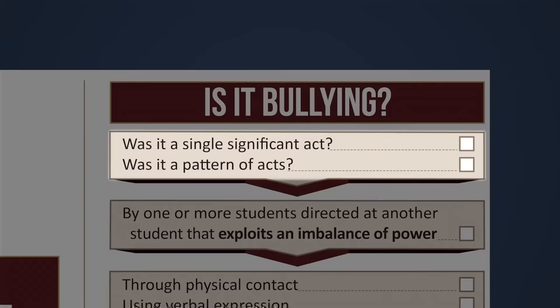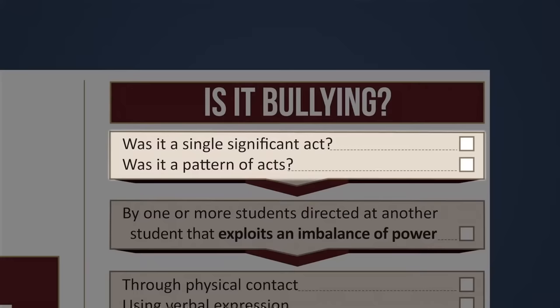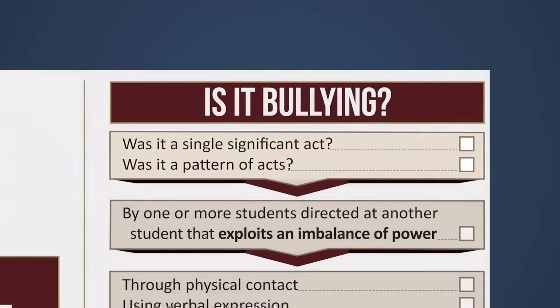The first question that should be asked is: is the action a single significant act or a pattern of acts? A single significant act could be contingent or dependent on the severity or pervasive effect it has on the victim or target of bullying. Next, ask: is the action by one or more students directed at another student, and does that action exploit an imbalance of power?